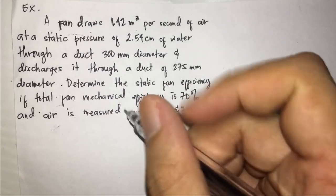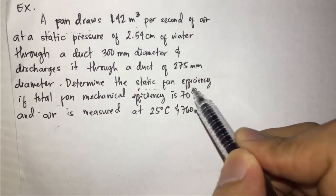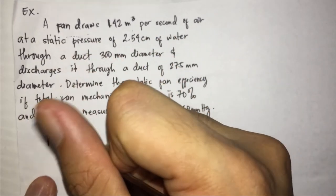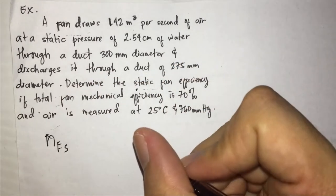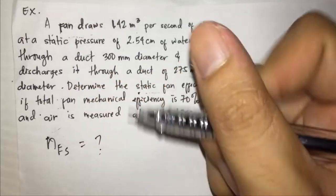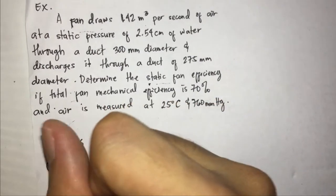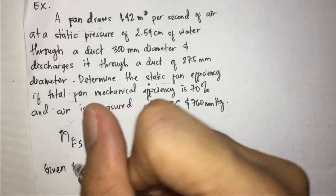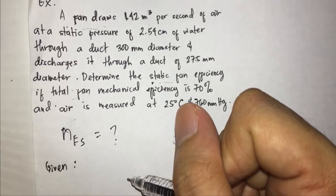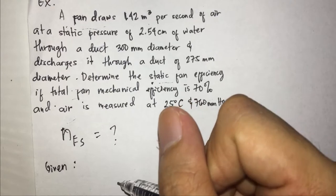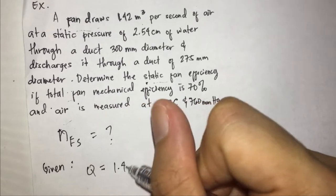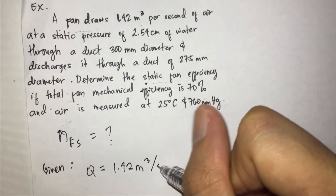What is required? The static fan efficiency, N. That is the required. Given: the first one is 1.42 cubic meters per second — that is the capacity or flow rate of the air. Q equals 1.42 cubic meters per second.